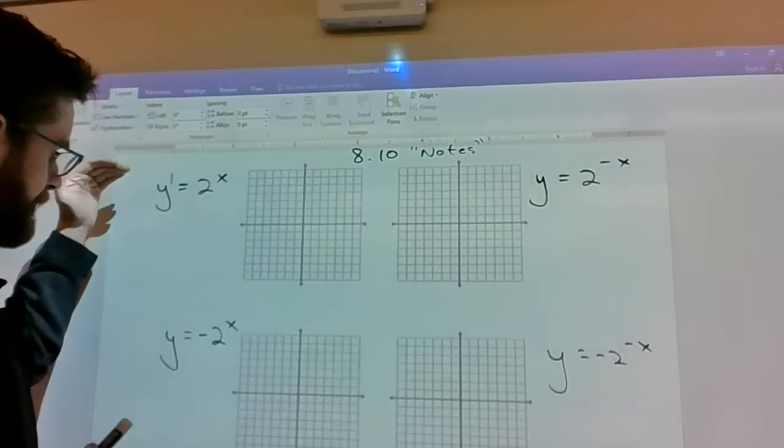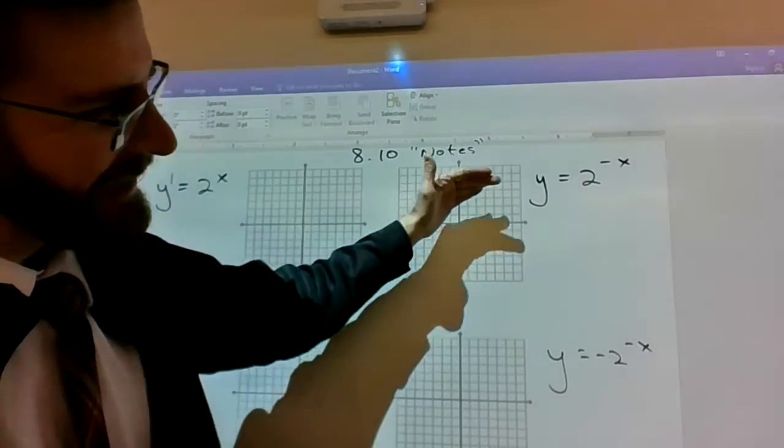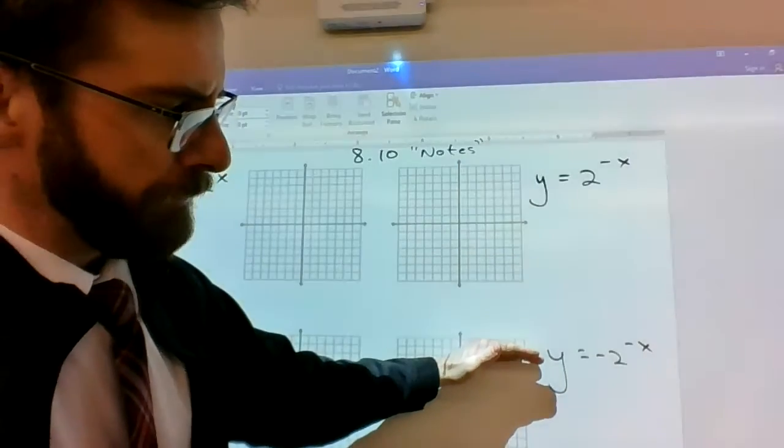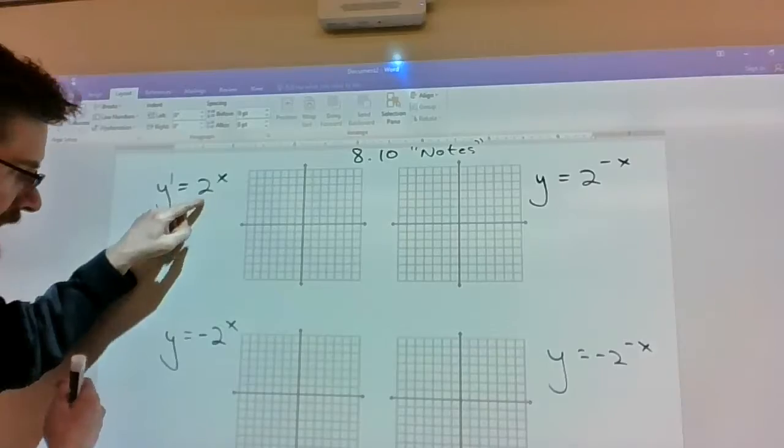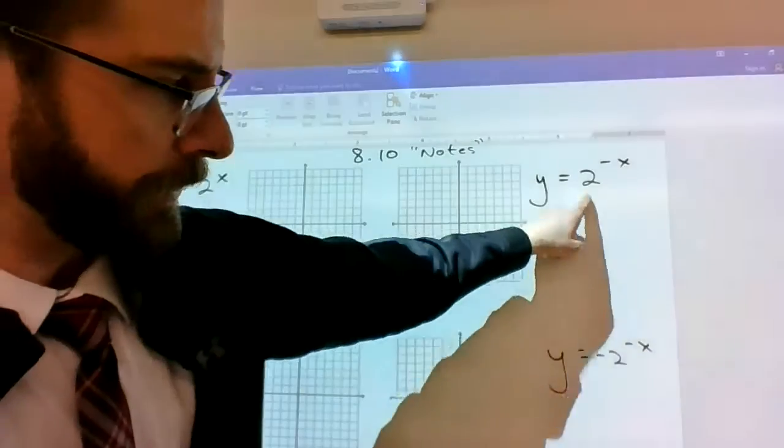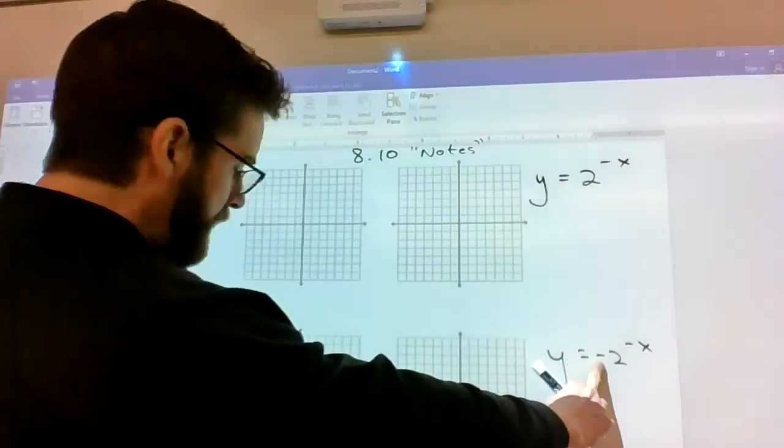So these are the four prototypes for graphing basic exponential functions, where your base is always a whole number.